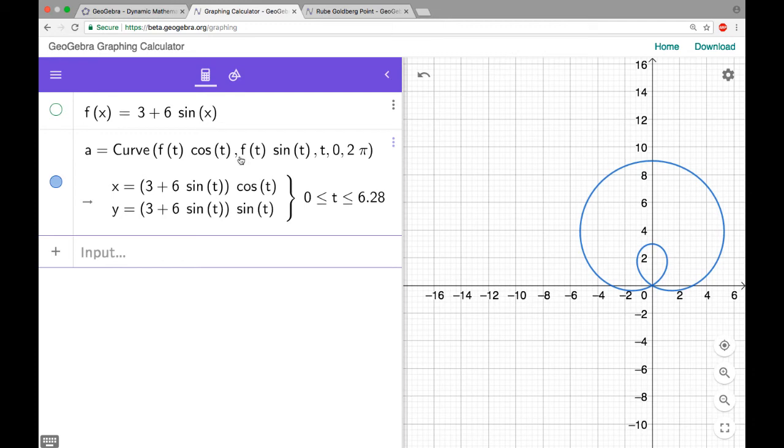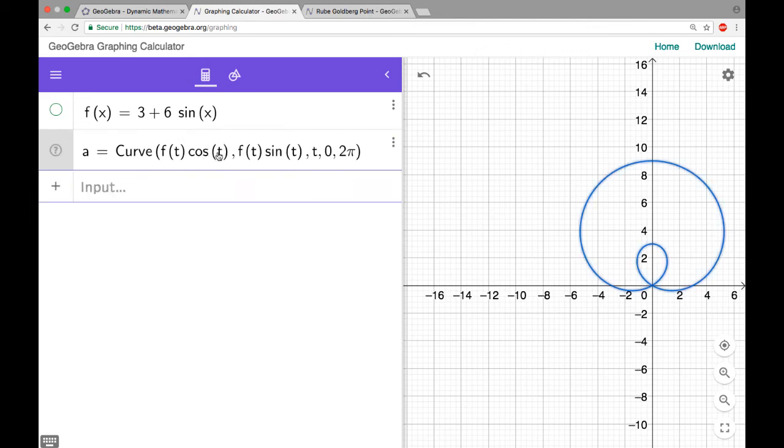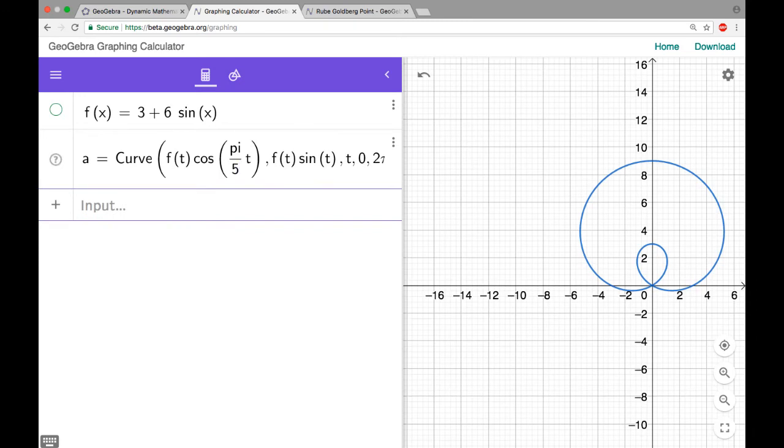So I want to change the periods of some things. So right now the cosine and sine, they both have a period of 2π. So if I want it to only take 10, 2π over b is equal to 10. So then b is equal to π over 5. So I've changed that. And I have to change this as well. So I'm going to multiply by π over 5, I'm going to hit enter. And you'll see that things just kind of get screwed up.